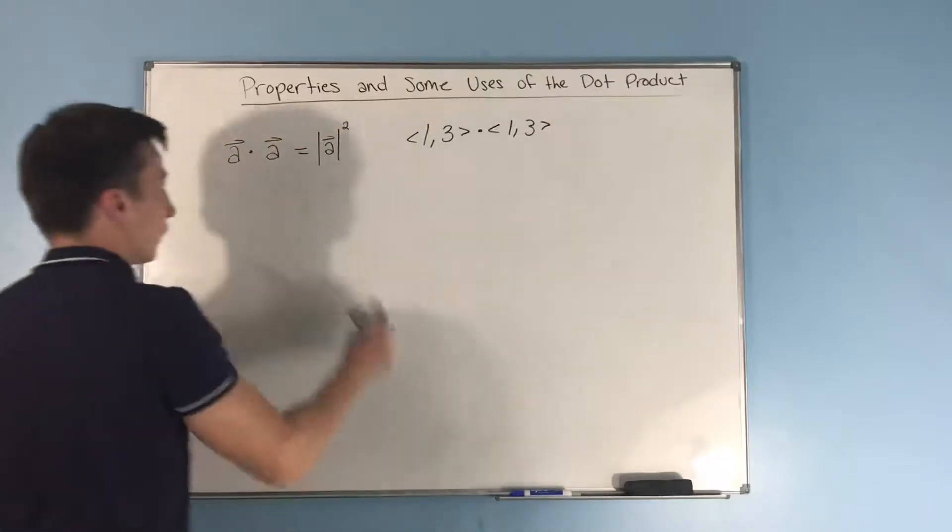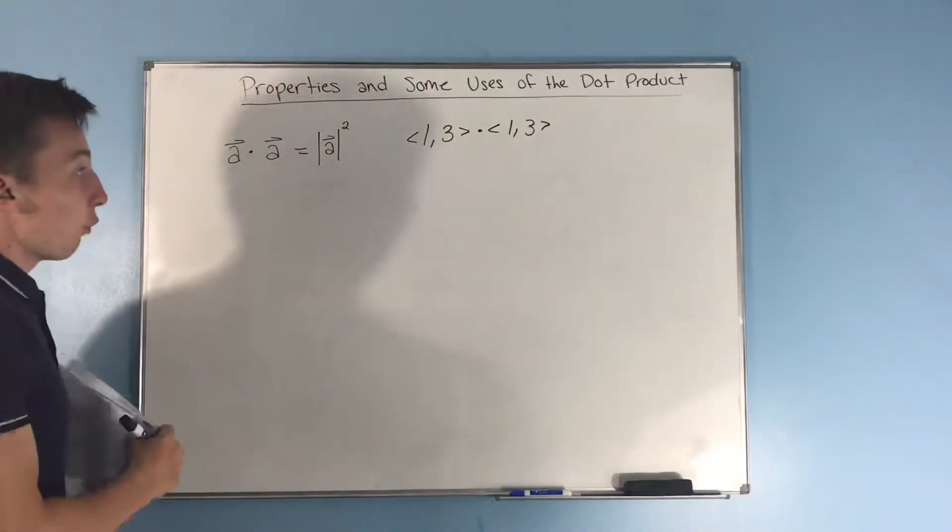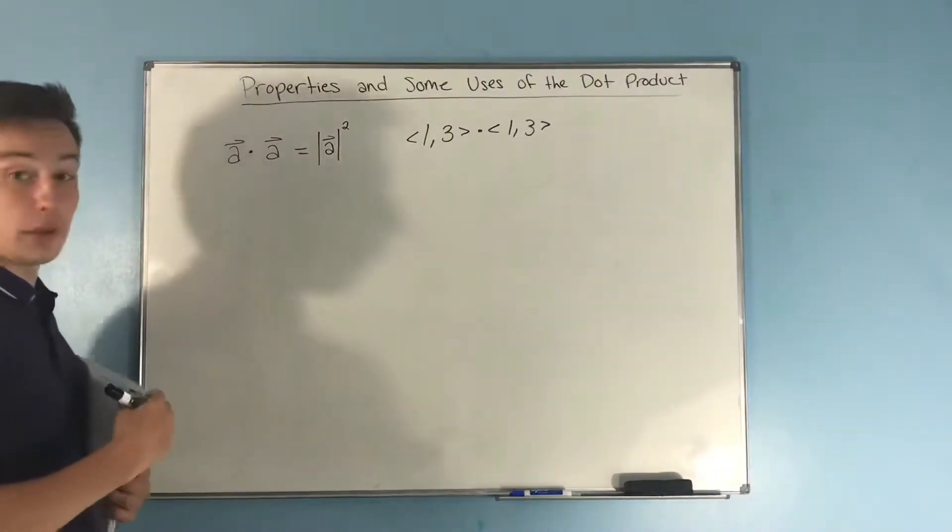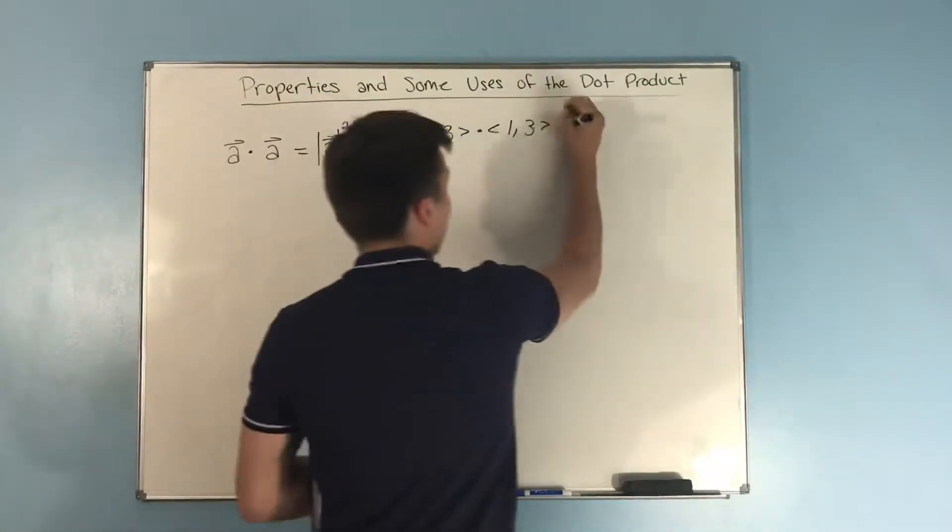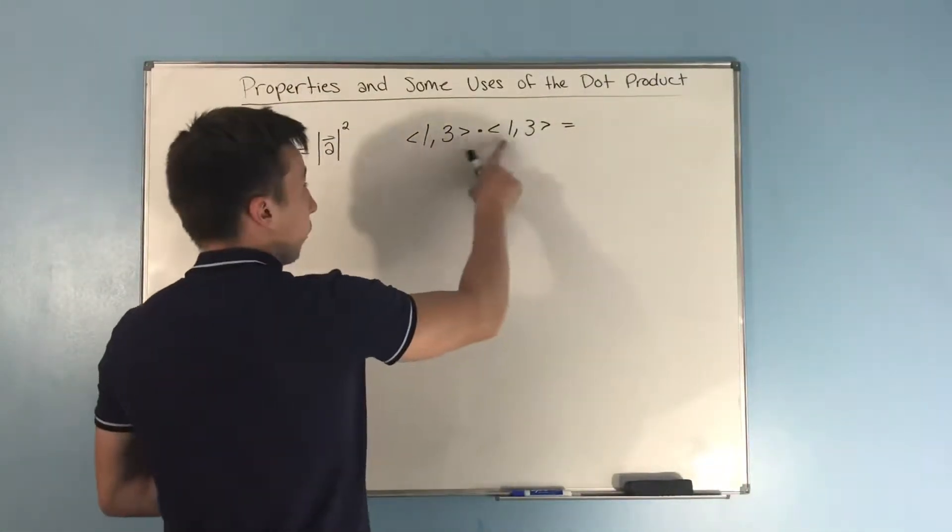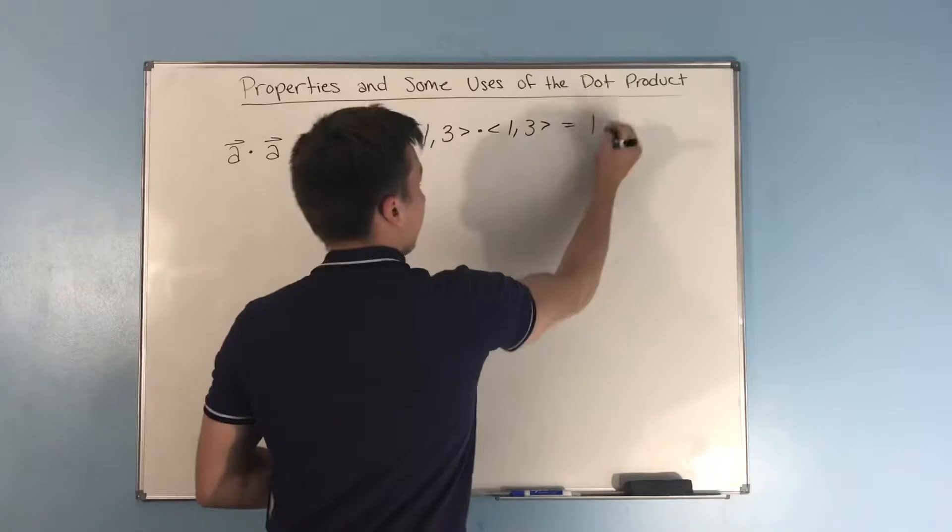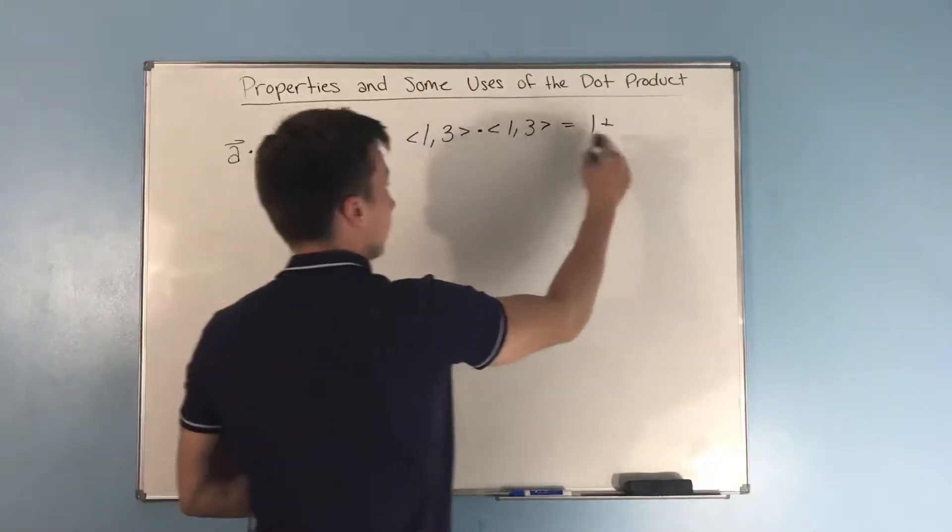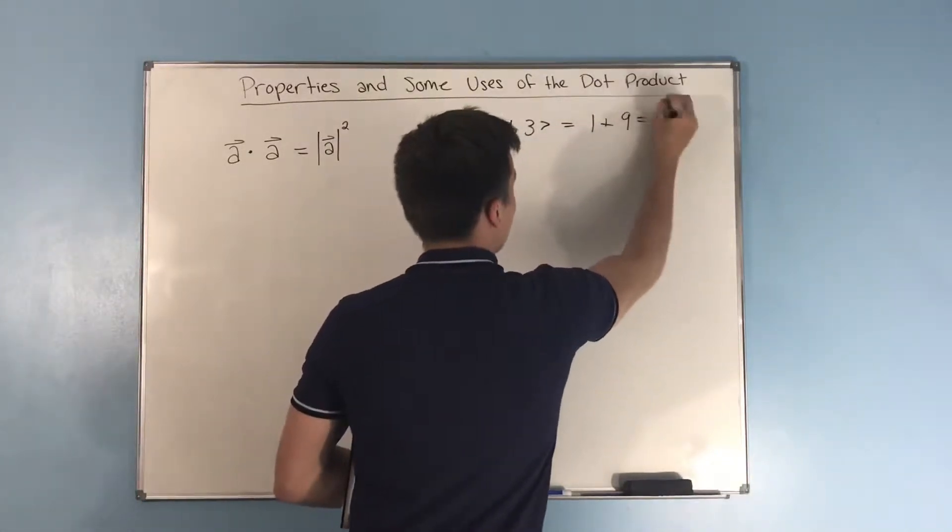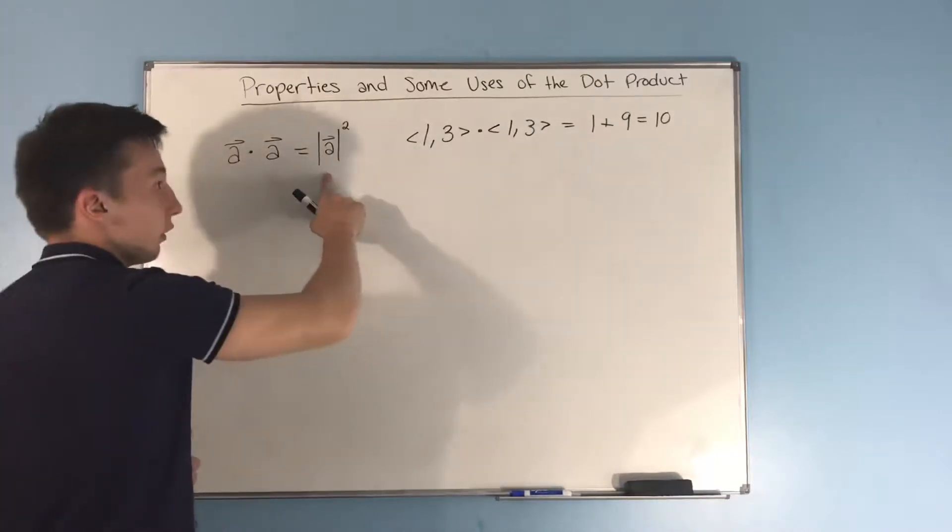For the left side of this equation, we have 1, 3 dot 1, 3. If you dot this, we get 1 times 1 is 1 plus 3 times 3 is 9, and you get 10. So we should get 10 on the right side.